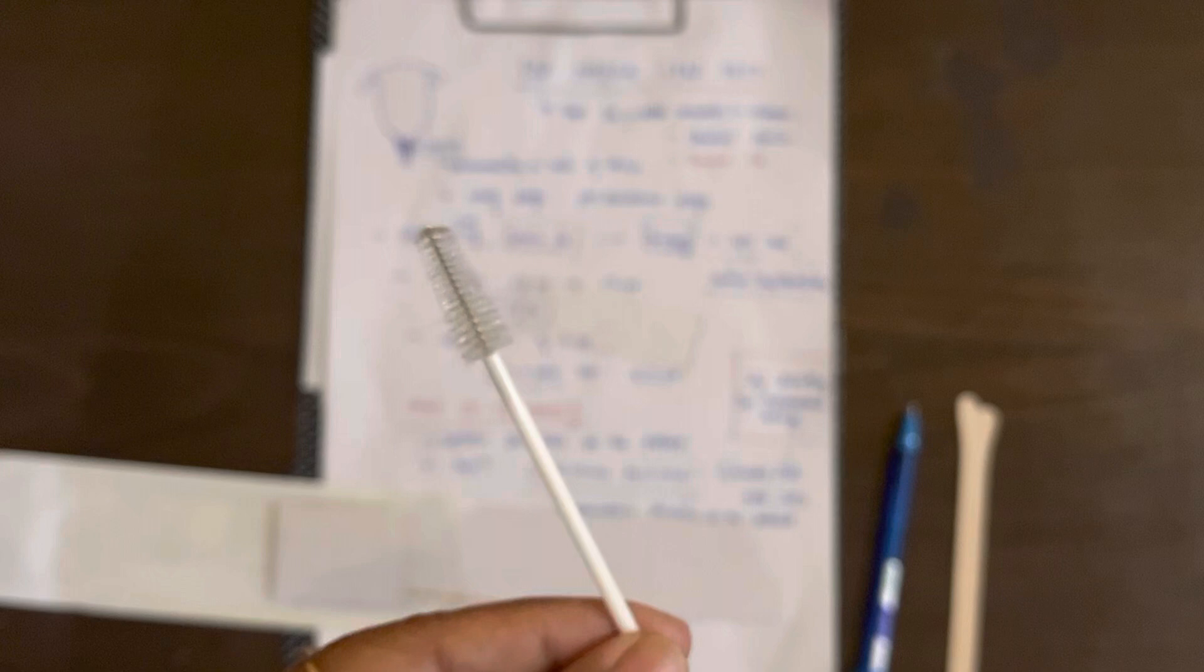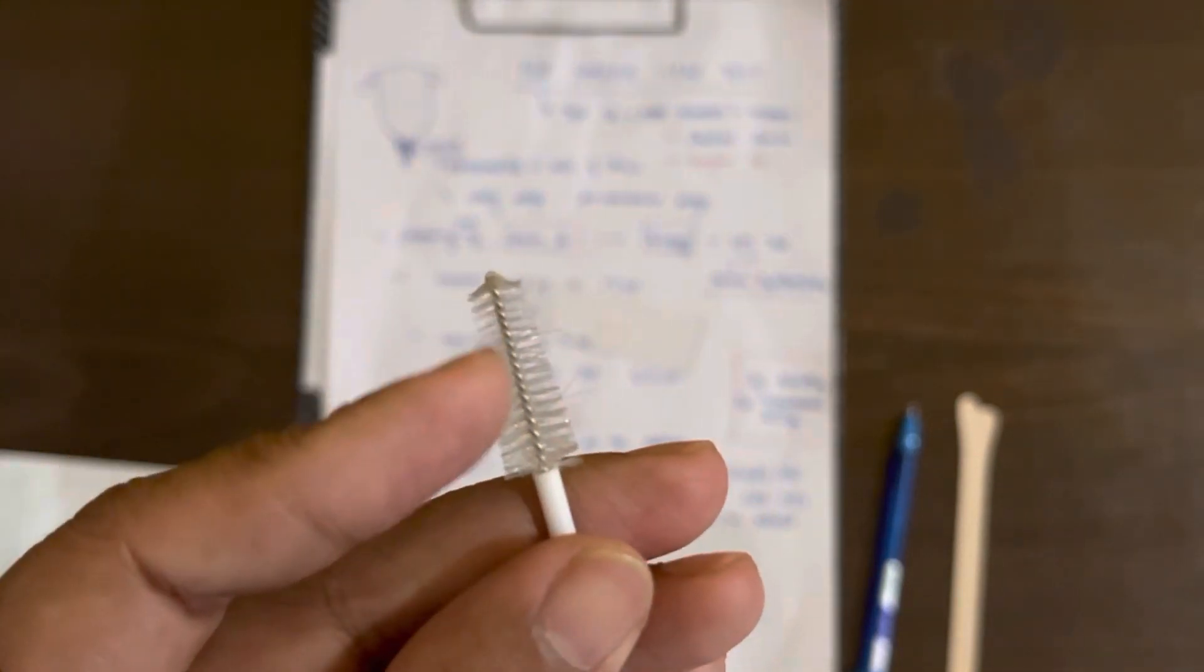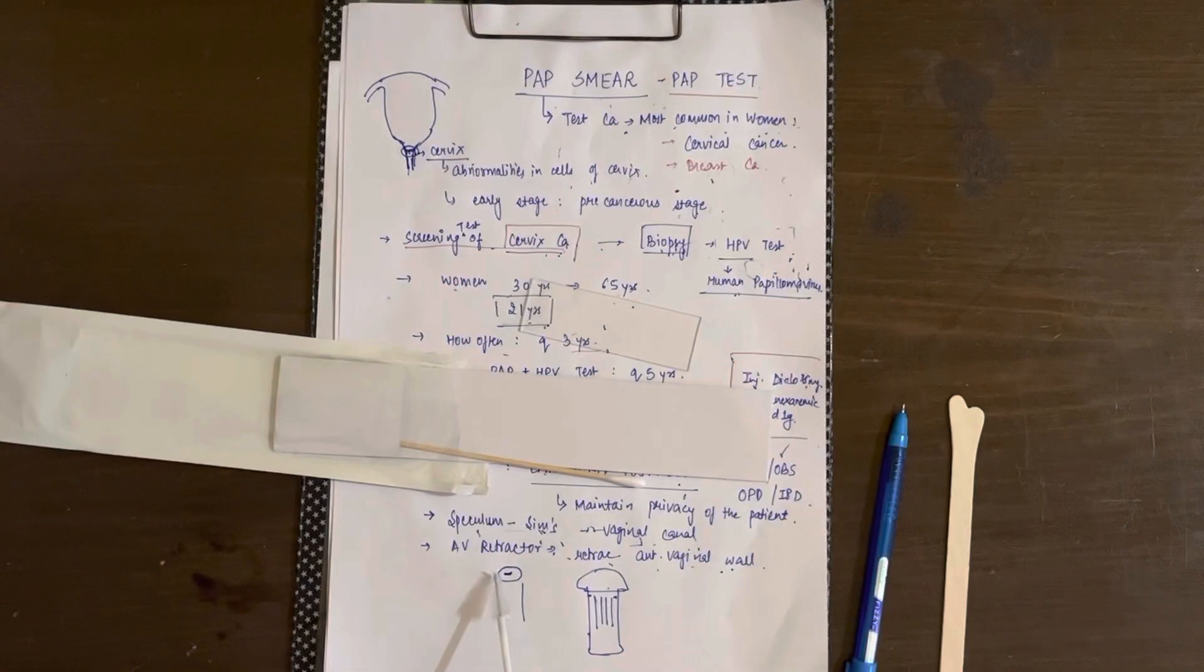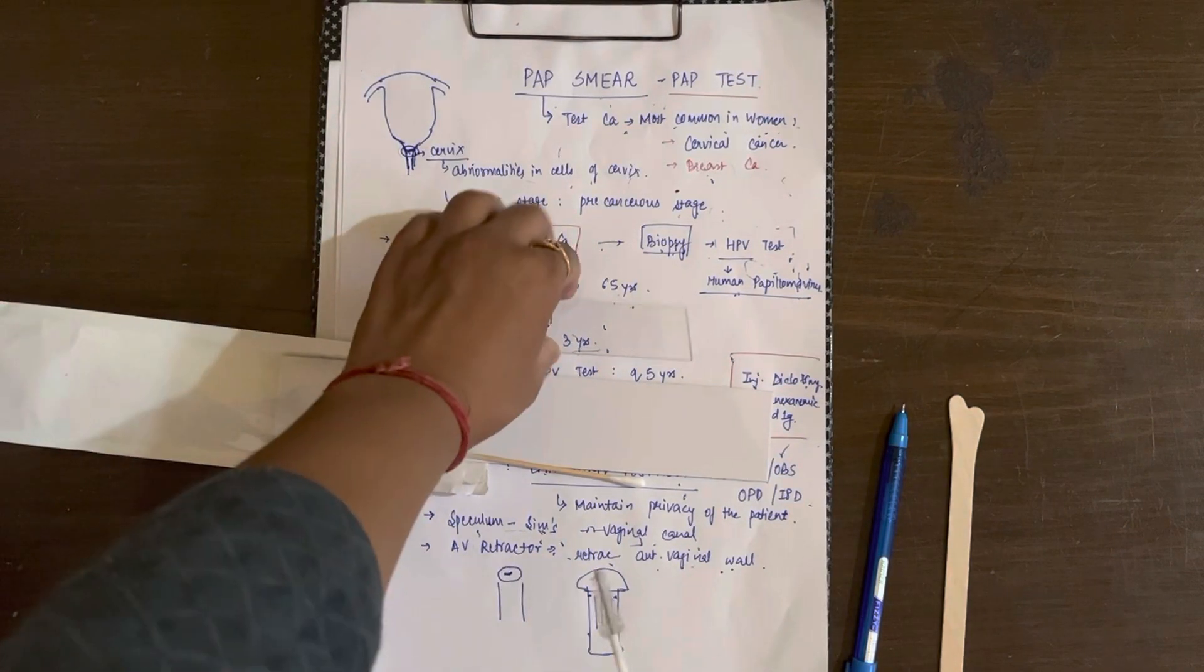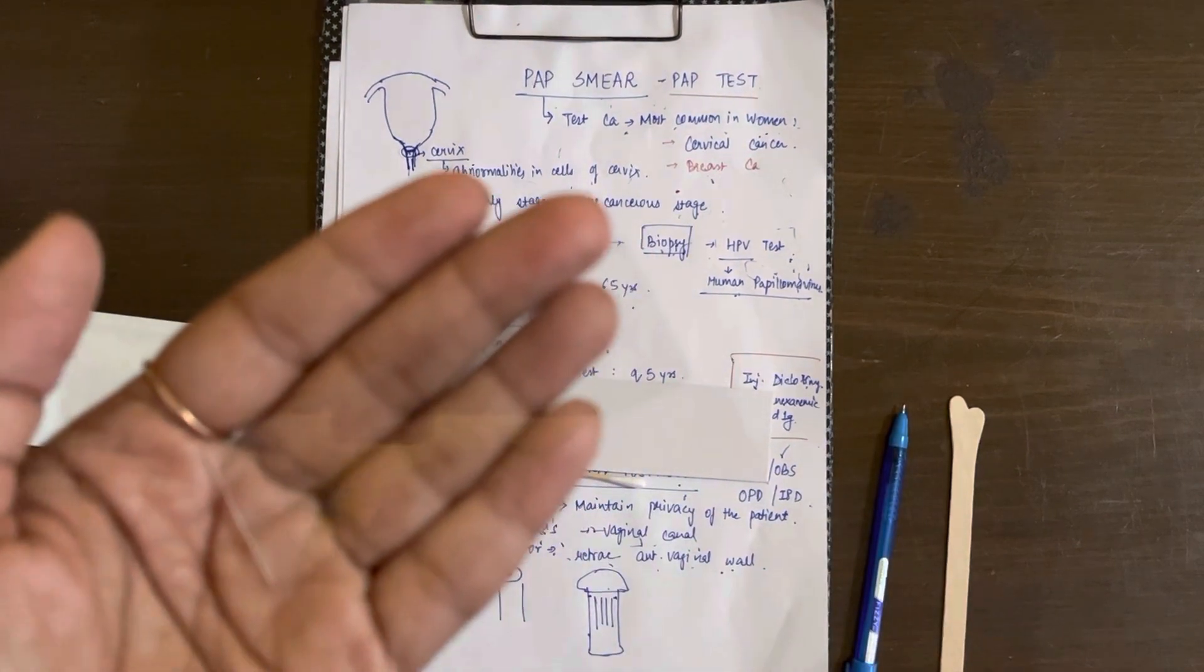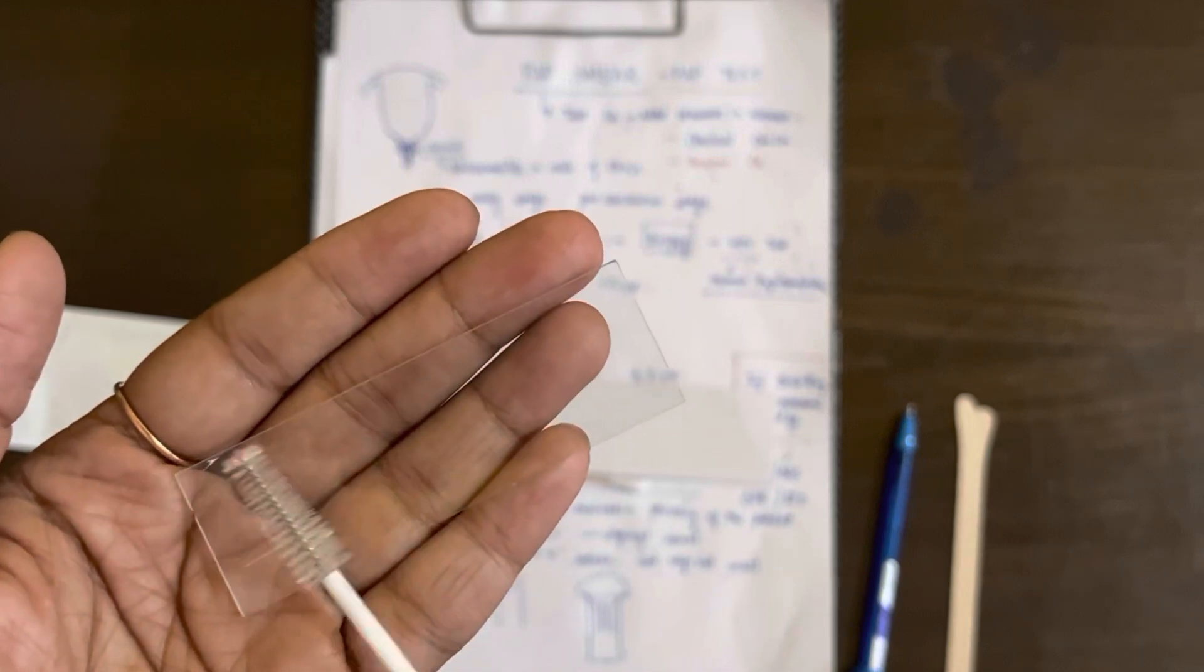The next thing we will use is this brush, this soft brush. You can see how soft it is. This is also to be rubbed near the mouth of the external os of the cervix like this, and then you rub it along the slide like this.